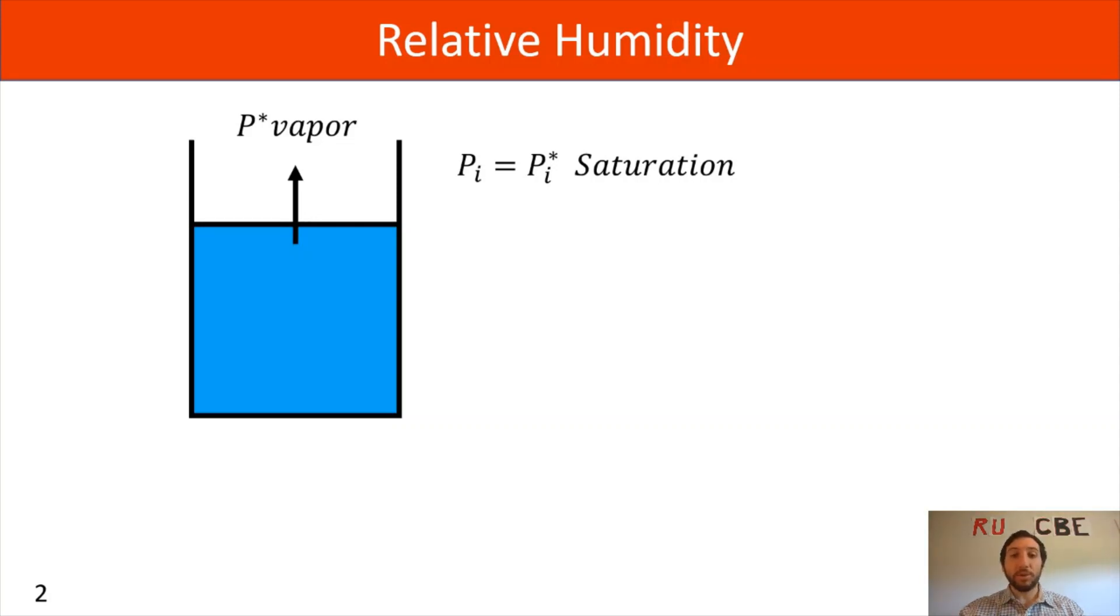In situations where your Pi is less than Pi star, you're superheated, where there's some room to increase the amount of liquid molecules in the vapor to reach saturation. If you have a situation where Pi is greater than Pi star, you would have condensation because you have exceeded the saturation point for that gas in your system.